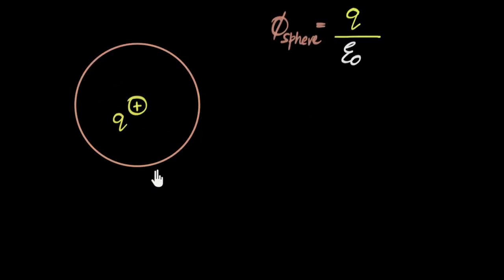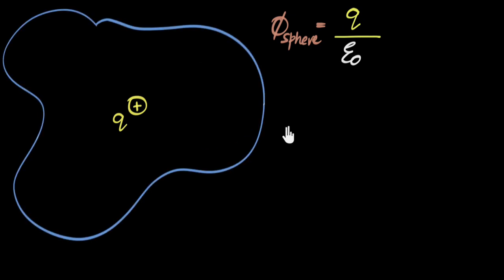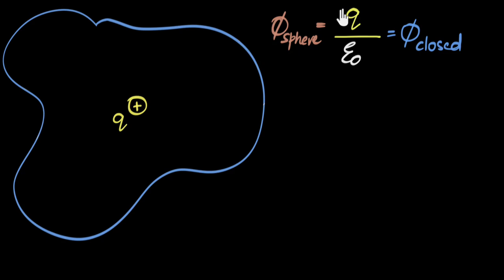If you keep a charge at the center of a sphere, we've seen that the total electric flux through the sphere is q divided by epsilon naught. What's amazing is that even if this was not a sphere and you had kept a charge in some random shaped closed surface, the flux through that would still remain the same — q divided by epsilon naught, regardless of where the charge is kept. In general, if there are multiple charges, the total flux is just the sum of all the charges inside the closed surface divided by epsilon naught. This is Gauss's Law.